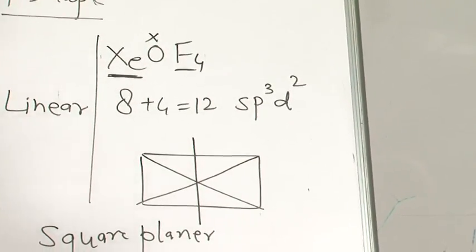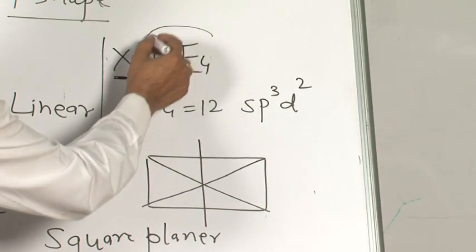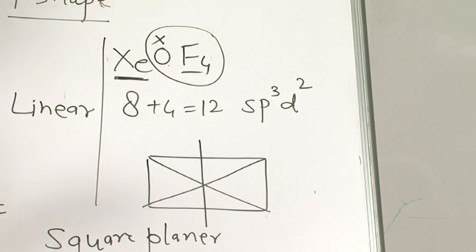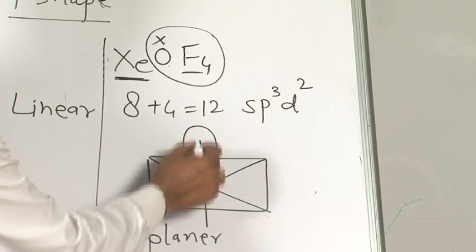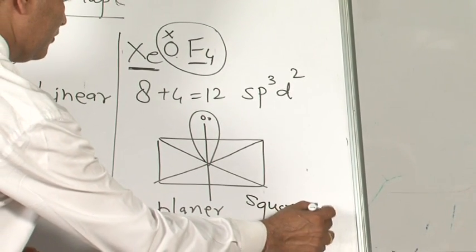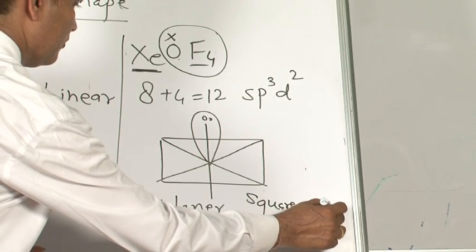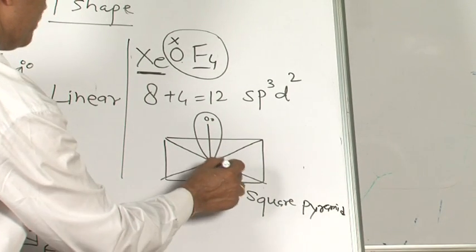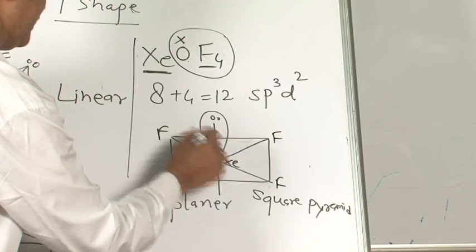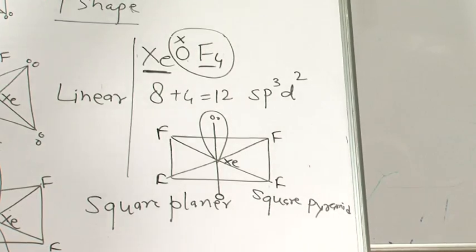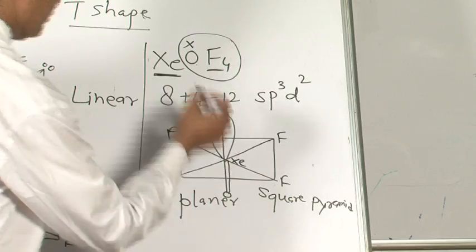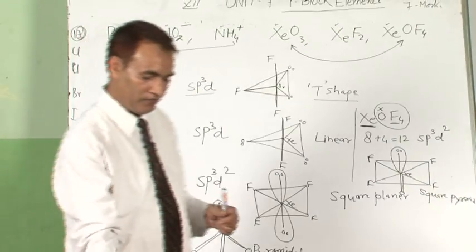Then count the bonding atoms — these are all bonding atoms: 4 plus 1 is 5. It means there is one lone pair of electron. Put this lone pair of electron here — it becomes square pyramidal. Here the central atom, rest will be F at the corners, and here will be the O. If there is no negative charge, there will be a double bond with the central atom and oxygen. This is the shape of XeOF4.